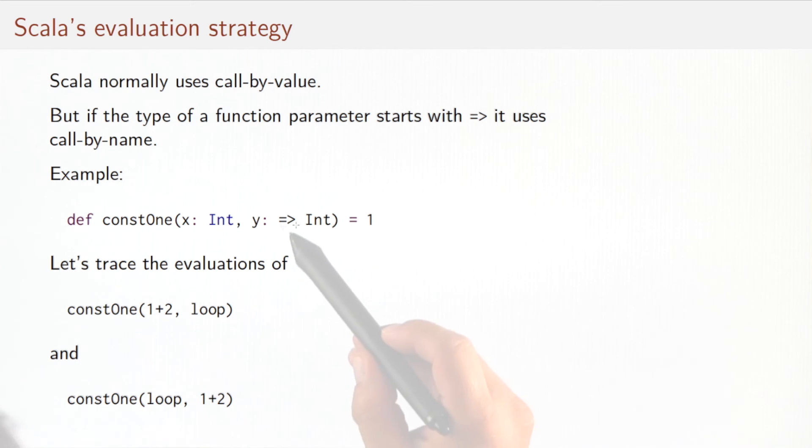Except that sometimes you really want to force call-by-name and Scala lets you do that also. You do that by adding an arrow in front of the parameter type. So this function constOne takes an x parameter int and a y parameter of type arrow int. And that means the parameter y is also an int but it will be passed call-by-name.